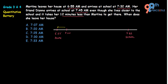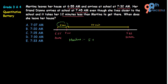From 6:55 to 7:00 is just 5 minutes. From 7:00 to 7:32 is 32 minutes. So the total time taken by Martina to reach school is 5 + 32 = 37 minutes.